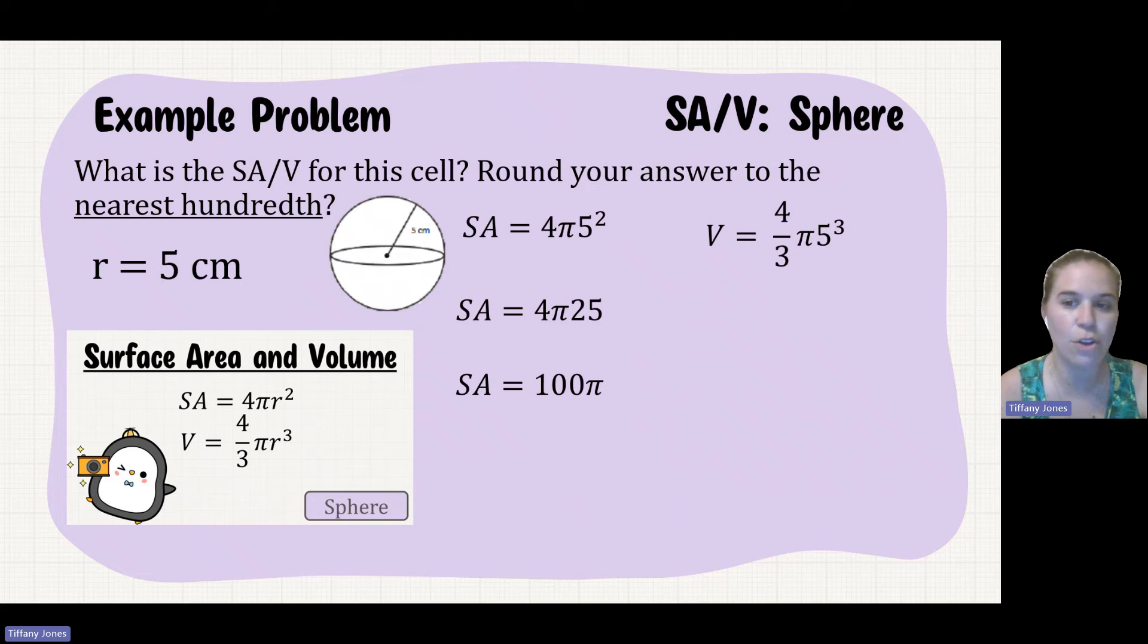My volume, we'll sub this in. 4/3π, again R being 5 cubed. And so 5 cubed is 125. So 4/3 times 125 gives you 500/3.